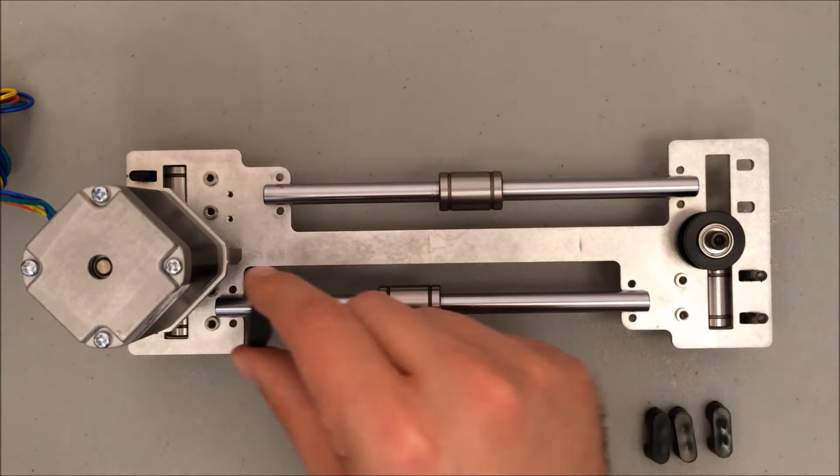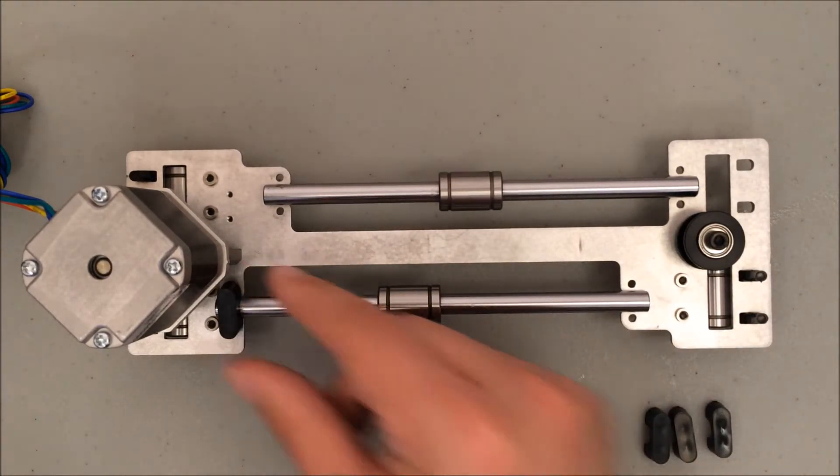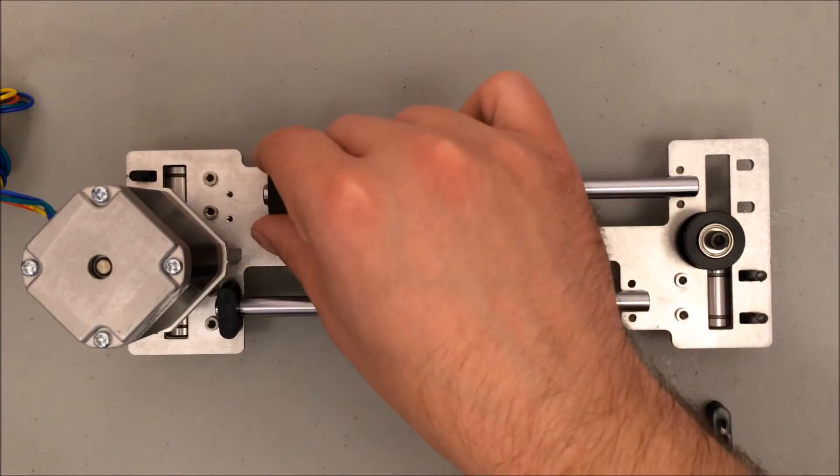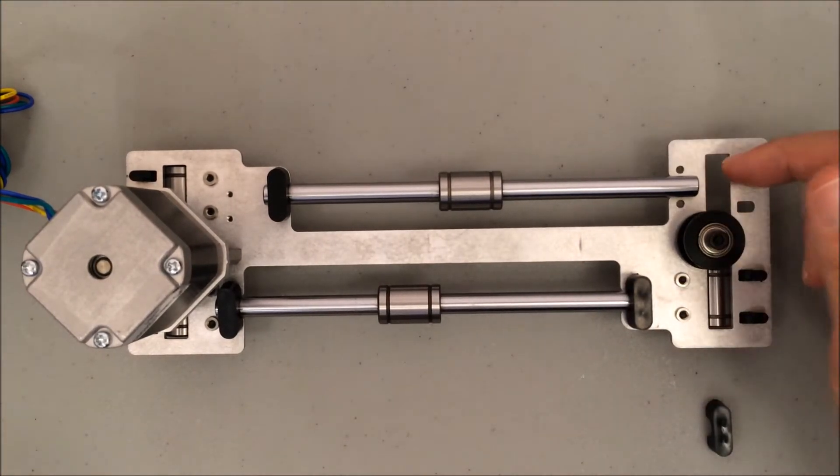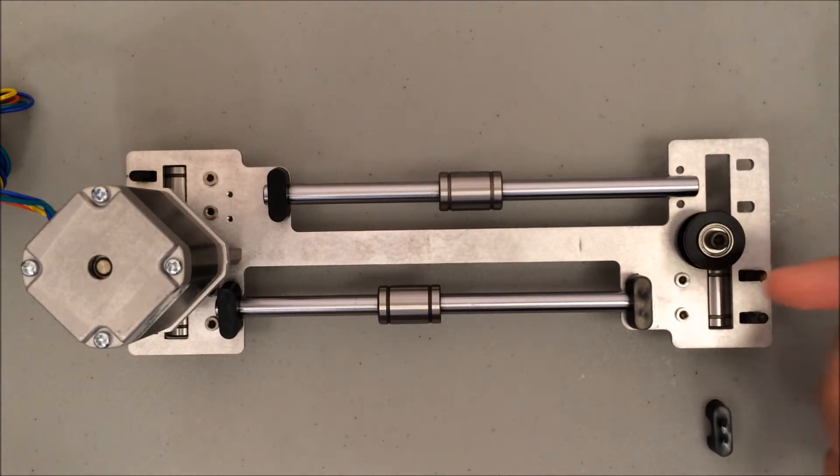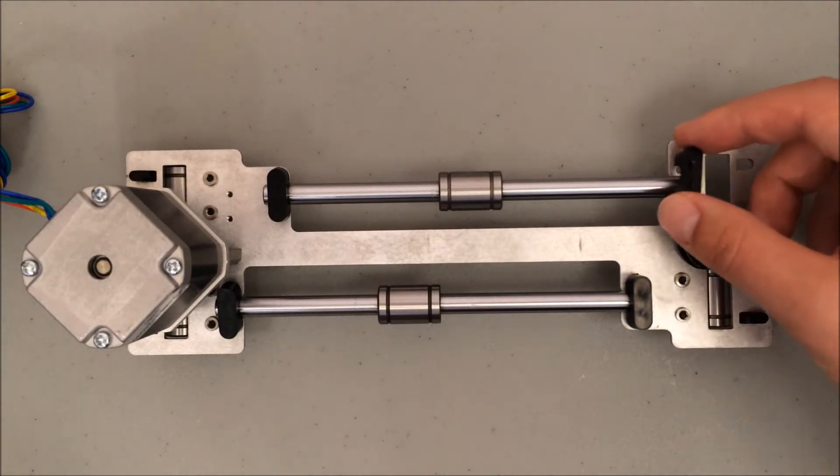These rod clamps will go on the ends. Right now I can only attach three of them, and the three I can attach right now I've set in place to show you. The fourth one I can only attach once I've placed another bearing and bearing clamp on the other side and then feed the plastite screw through that into this rod end.